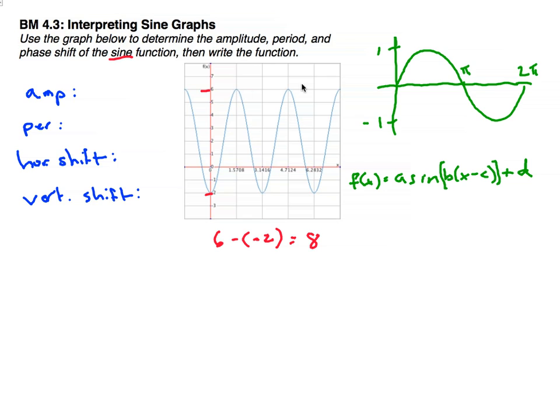And half of that would be the top half of the sine function, and half of that would be the bottom sine function. So, if I divide that by 2, I get 4. That's going to be my amplitude.